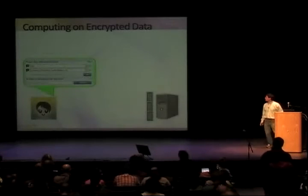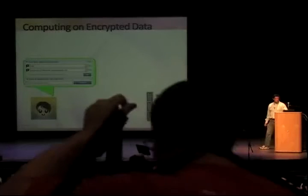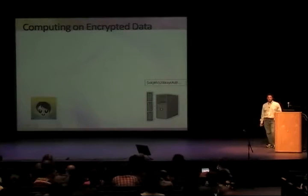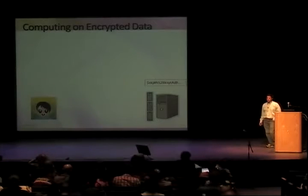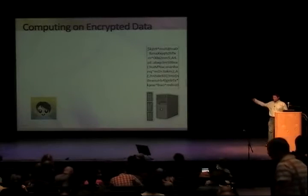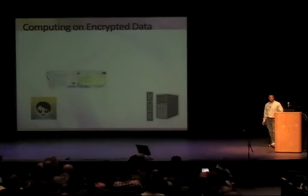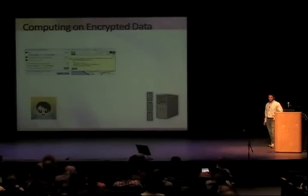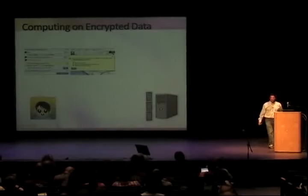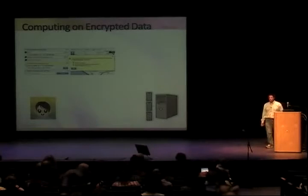Here's an example. Suppose I wanted driving directions from LAX to the University of California, Santa Barbara. I have my query, which is just a string. I have my secret key. I encrypt my query and send it to the cloud. The server on the other end sees only a string of gibberish. Nonetheless, I want the server to work on this gibberish and produce another string of gibberish, such that if I decrypt that later string, I actually get my answer.